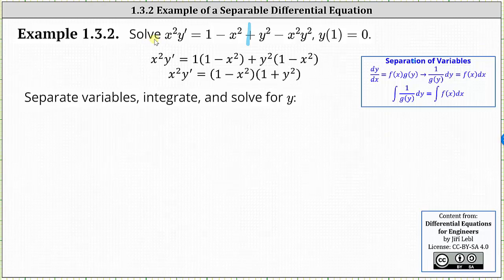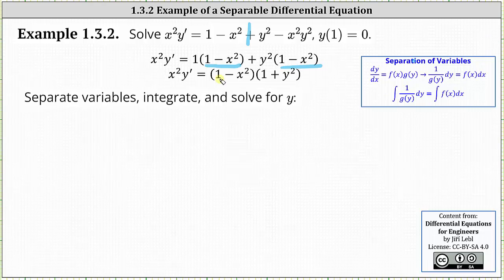This gives us x squared y prime equals one times the quantity one minus x squared, plus y squared times the quantity one minus x squared. Notice the two products on the right share a common binomial factor of one minus x squared, which we can now factor from the right side. This gives us x squared y prime equals the quantity one minus x squared times the quantity one plus y squared.